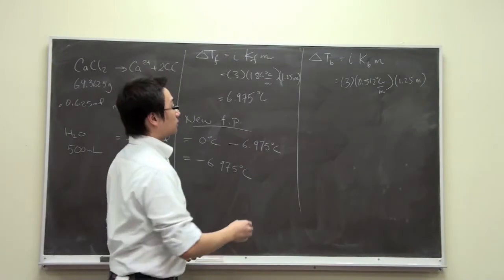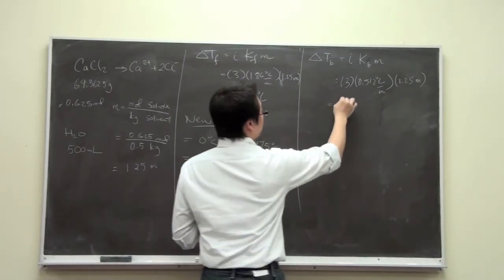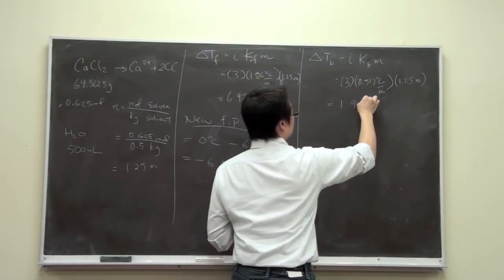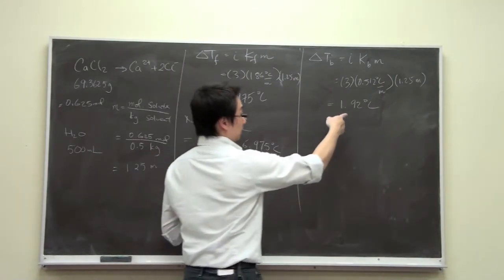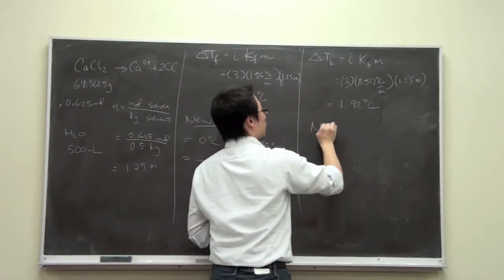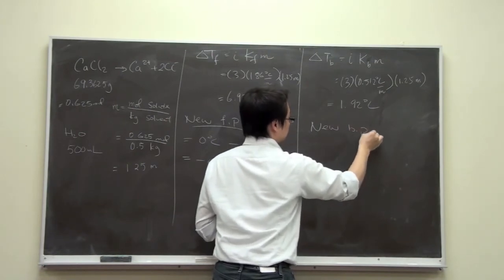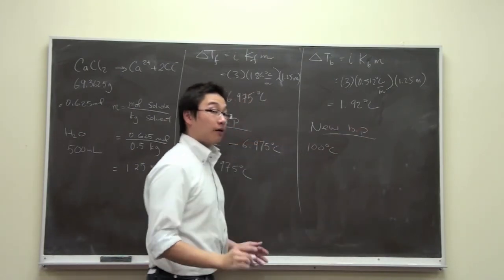Calculate it. You will find out that the change of temperature is 1.92 degrees Celsius. Now again, this is just the change. So the new boiling point is going to be 100 degrees Celsius.